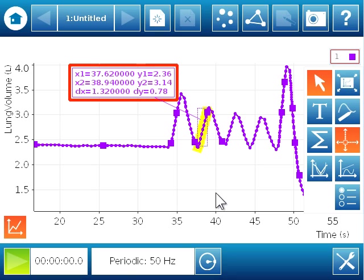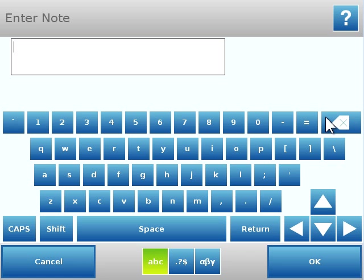I'm going to preserve that value for future reference. I can choose the annotate tool and type in tidal volume equals 0.78 liters.